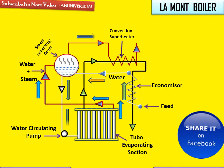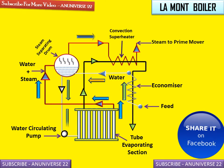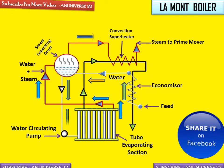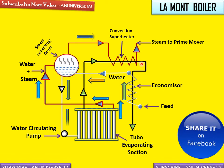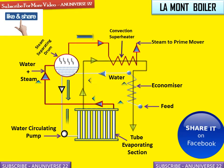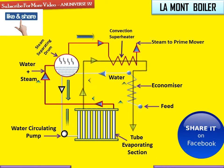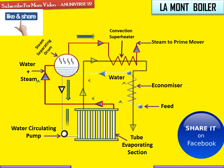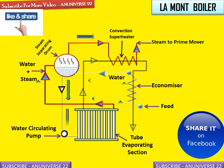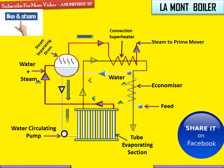The steam generated in the steam separator drum is supplied to the super heater, and from the super heater it is supplied to the prime mover. We can see the La Mount boiler in proper working condition: the mixture is sent to the steam separator drum, which is situated outside the boiler.